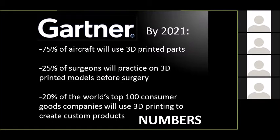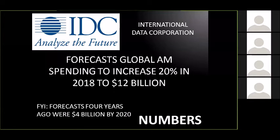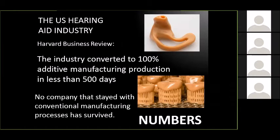20% of the top 100 consumer goods will use 3D printing to create custom products — and that custom factor matters. New estimates put this industry at $12 billion this year alone, which is interesting because just a few years ago it was projected to be only $4 billion by 2020. So we're three times the value and two years ahead of schedule. Also, a Harvard Business Group article points out that in less than 500 days, 100% of the American hearing aid industry switched over to 3D printing. Any companies that did not are already gone. This type of custom product sees that fast of a switchover for industry — and that matters because it's coming from the business side, not the tech side.